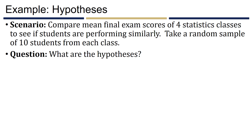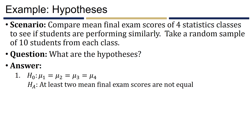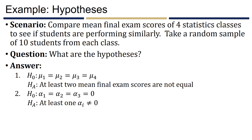For our final exam example, the hypotheses stated through means are: H_0: mu_1 = mu_2 = mu_3 = mu_4, and H_a: at least two mean final exam scores are not equal. Stated through the regression model: H_0: alpha_1 = alpha_2 = alpha_3 = 0 simultaneously, and H_a: at least one of these three alphas is not equal to zero.